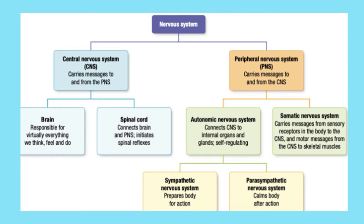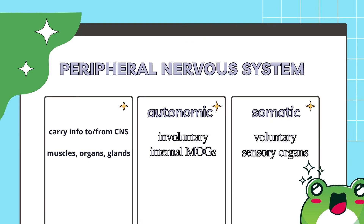Let's discuss the other main division of the nervous system: the peripheral nervous system. The peripheral nervous system consists of all other nerves connecting to the central nervous system, for example in your arms and legs. It carries information to and from muscles, organs and glands. This is further divided into the autonomic nervous system and the somatic nervous system.